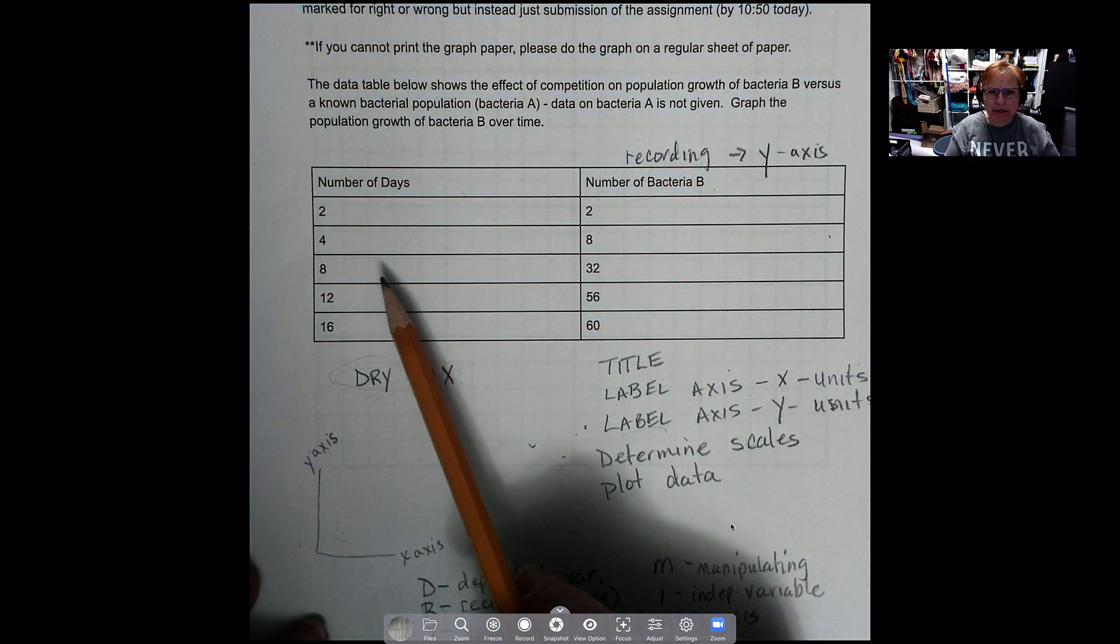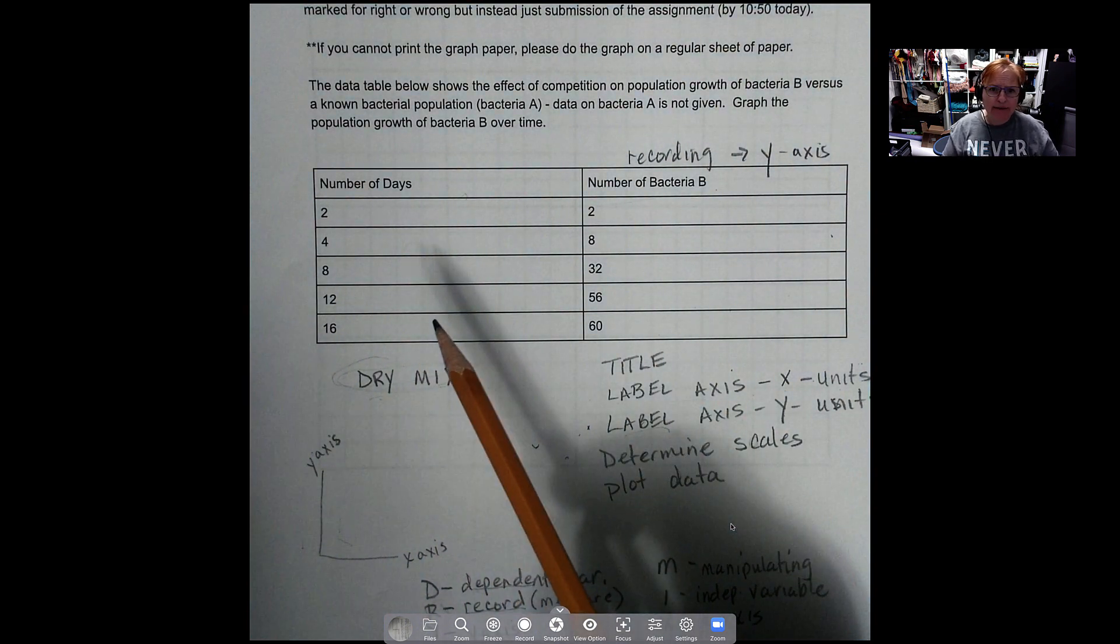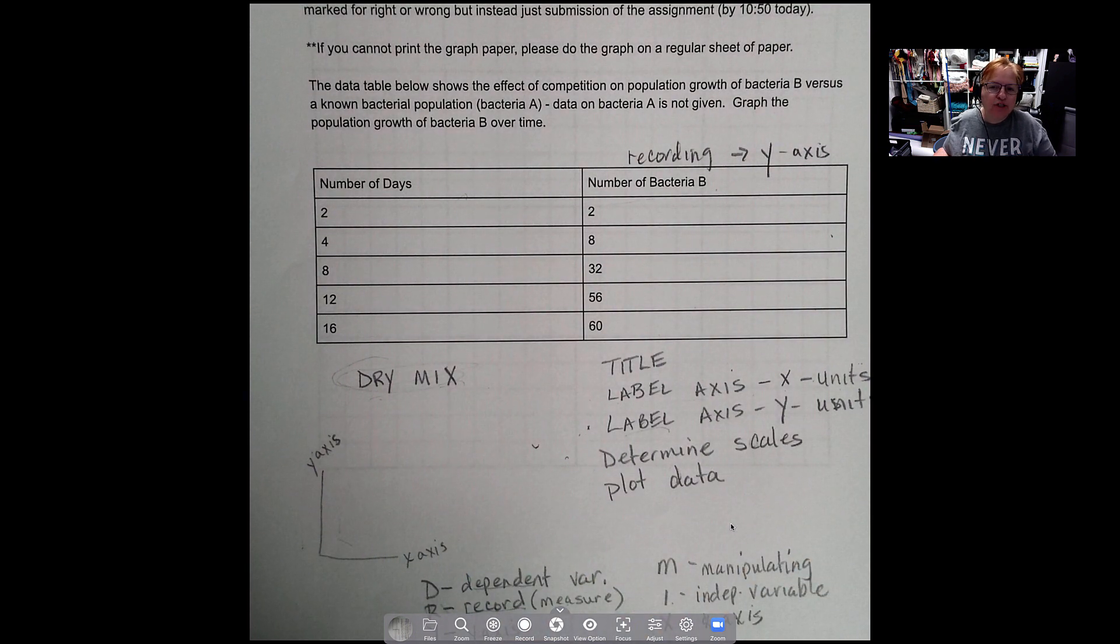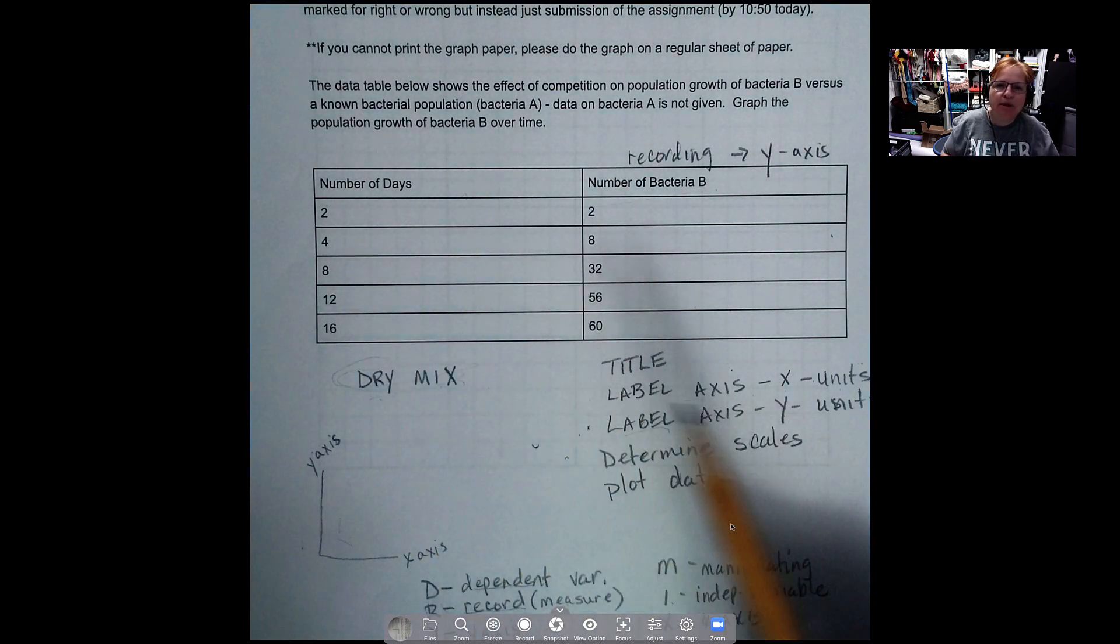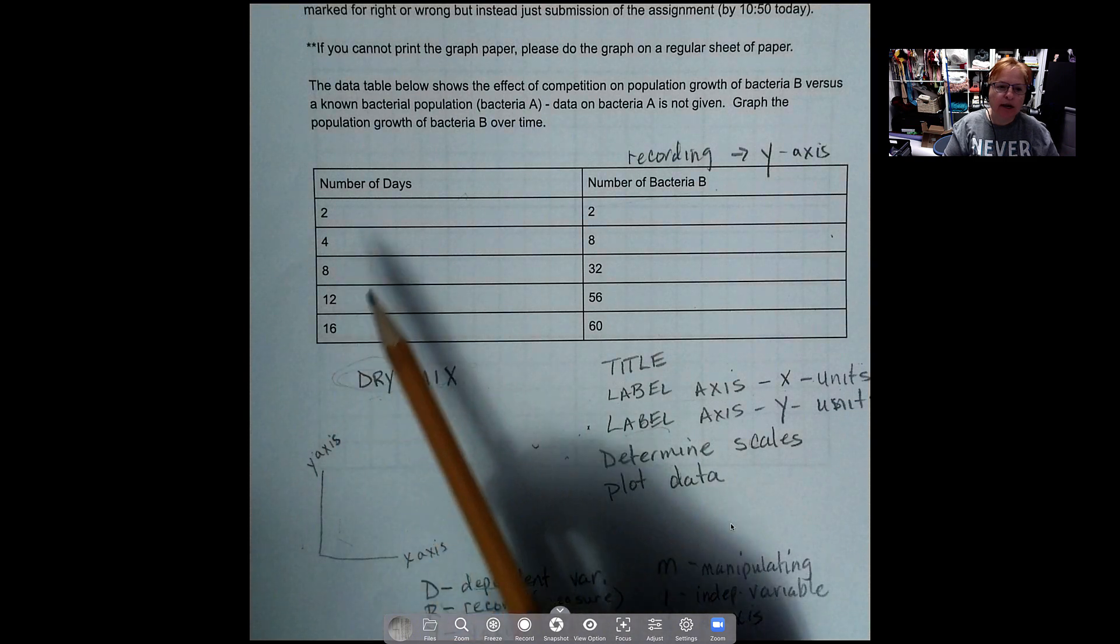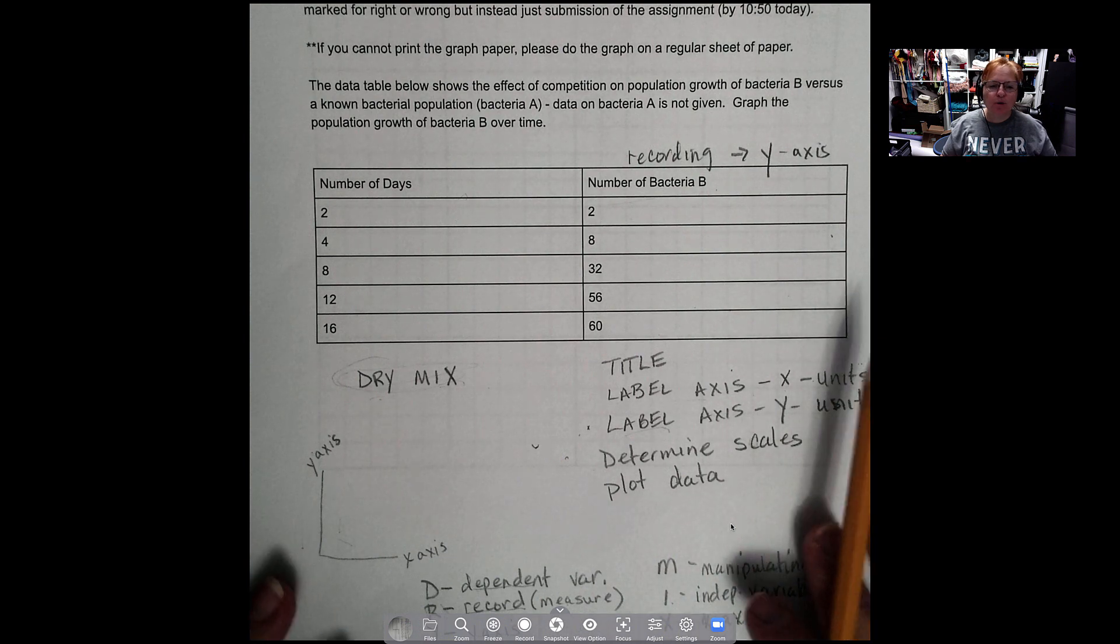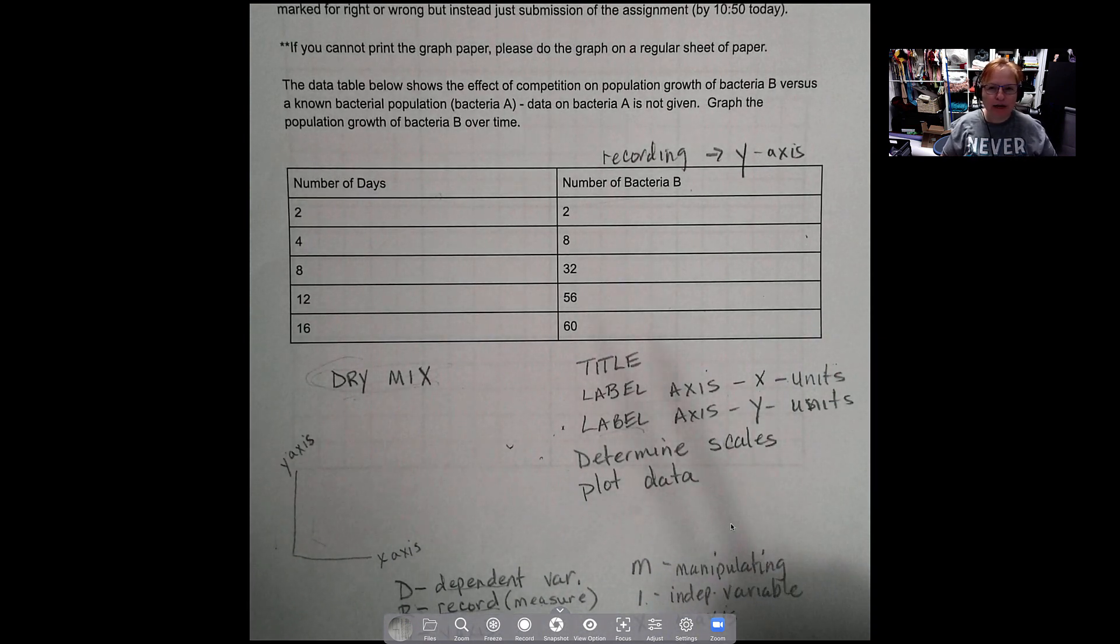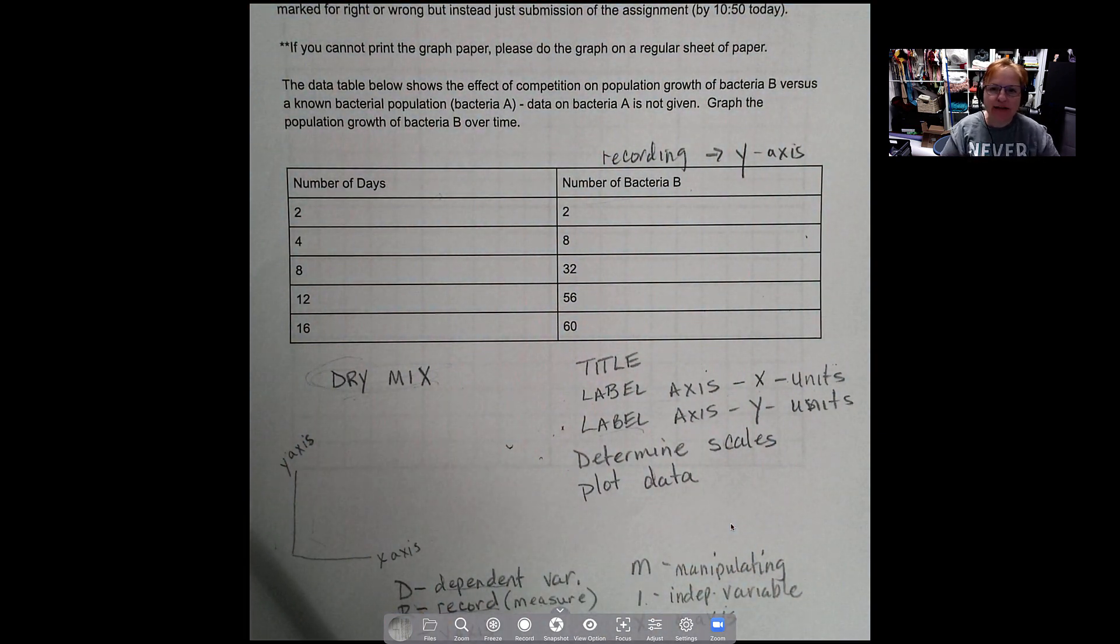Now you might be like, I don't understand how you are manipulating time, you can't stop time, you can't manipulate time. Except we're allowing these things to grow for so many days, so we could stop the number of days anywhere where we want to. So we could have allowed this experiment to go on 20 days or 30 days, right? So while time in itself is not something that you can alter, right, you can alter the number of days that you allow an experiment to go on.